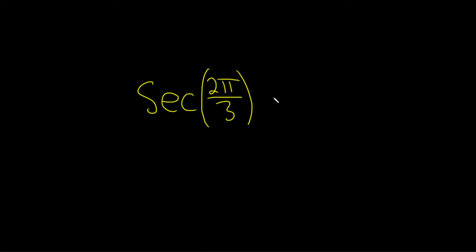Hi everyone. In this video, I'm going to show you how to find the secant of 2π over 3 by hand. This is just the way I do it — there are other ways of doing it. First, I like to write secant as the reciprocal function. It's 1 over cosine — the way I memorize it is, it's the one that starts with the other letter. So it's 1 over cosine of 2π over 3.